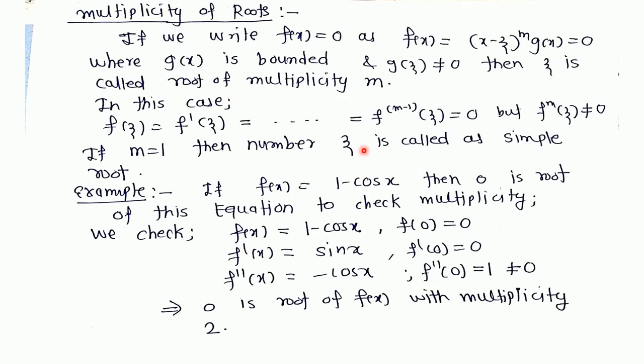If m = 1, then ξ is a simple root. See example: if f(x) = 1 - cos x, then 0 is a root of multiplicity 2. Please check: f(x) = 1 - cos x, put x = 0, f(0) = 0. Find first derivative: f'(0) = 0. Find second derivative: f''(0) ≠ 0. Therefore, 0 is a root of multiplicity 2.